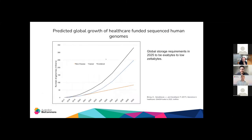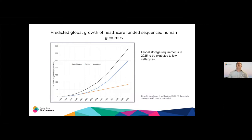I'll just set some context before we get into the other speakers. On this slide we can see predicted global growth of healthcare-funded sequenced human genomes — in orange for rare diseases, blue for cancer, and combined in black. The expected growth is far greater than linear, and by 2025 if we extrapolate, storage requirements throughout the world are expected to be in excess of exabytes to low zettabytes. So clearly from a volume perspective this is a big challenge and we need to think about how we're going to address it.